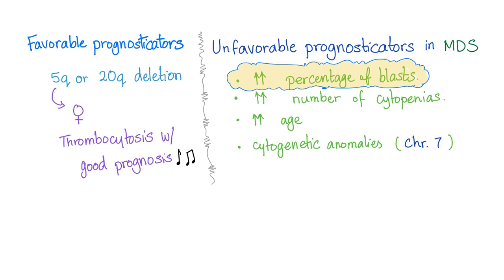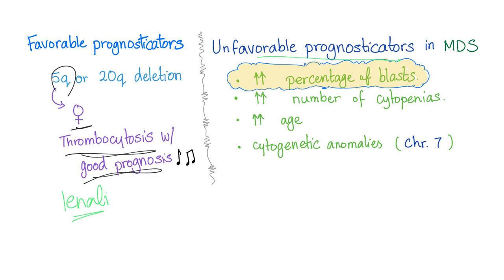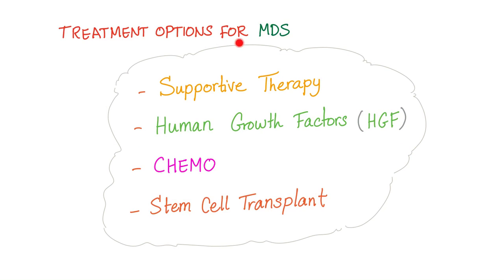Regarding prognostic factors: favorable factors include 5q deletion and 20q deletion. 5q deletion is very high yield — it is more common in females, associated with thrombocytosis and good prognosis, and can be treated with lenalidomide. Unfavorable prognosticators include increased percentage of blasts, increased number of cytopenias, increased age, and cytogenetic abnormalities such as chromosome 7. Treatment options include supportive therapy, human growth factors, chemotherapy, or stem cell transplant.